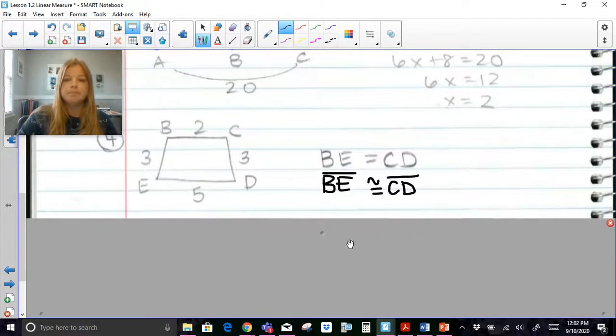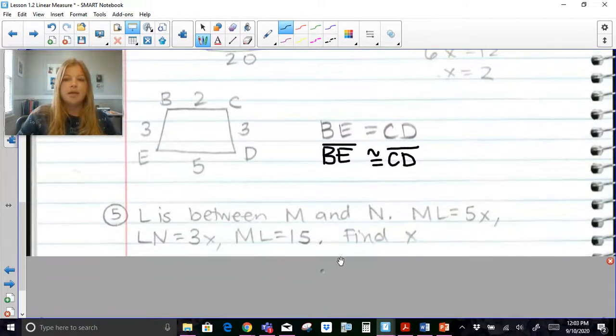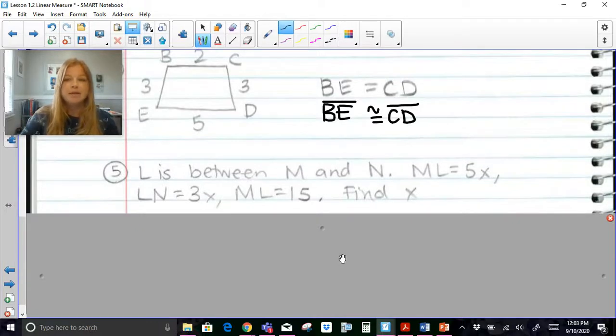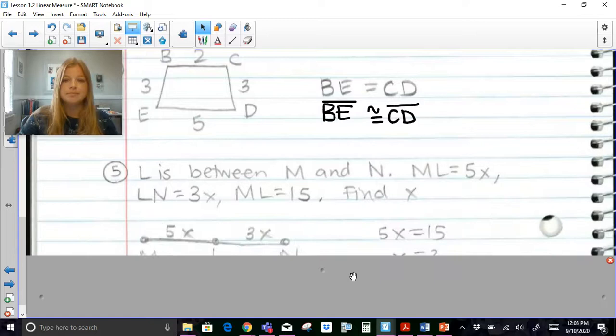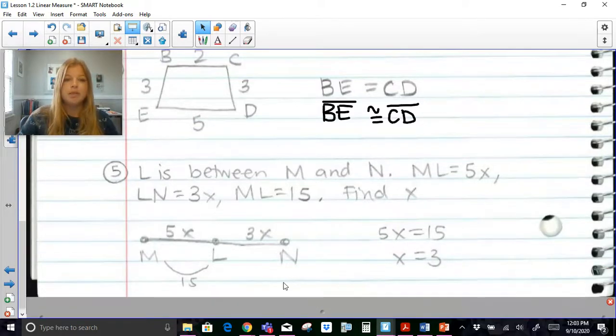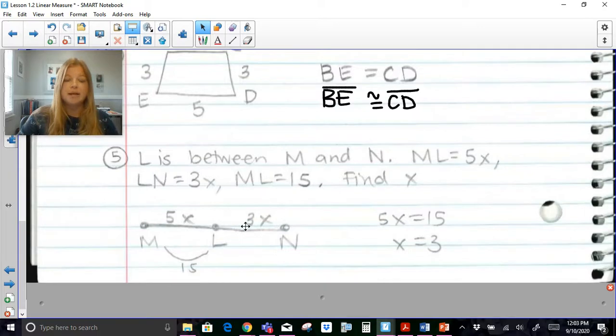And then this is our last problem. L is between M and N, ML equals 5X, LN equals 3X, ML equals 15, so you would need to draw a diagram and then find X. Feel free to pause and then press play. So this is what your diagram would look like. Now 5X is ML, LN is 3X, but it also does tell you that ML is 15, so that would mean that 5X is actually equal to that 15 and X is equal to 3. So that problem was a little different. I hope this video was helpful for you, thank you so much for watching, bye.